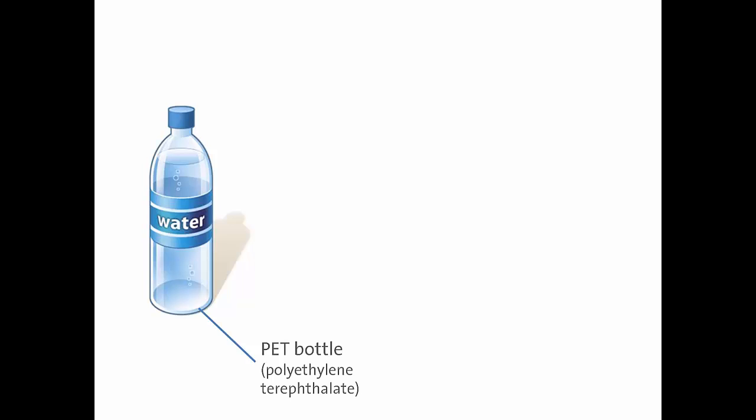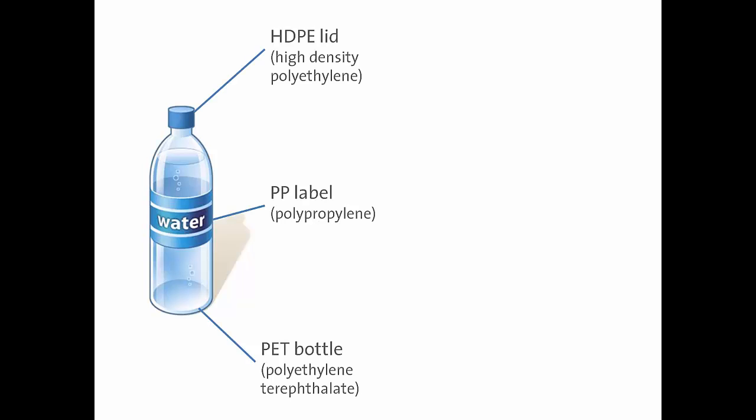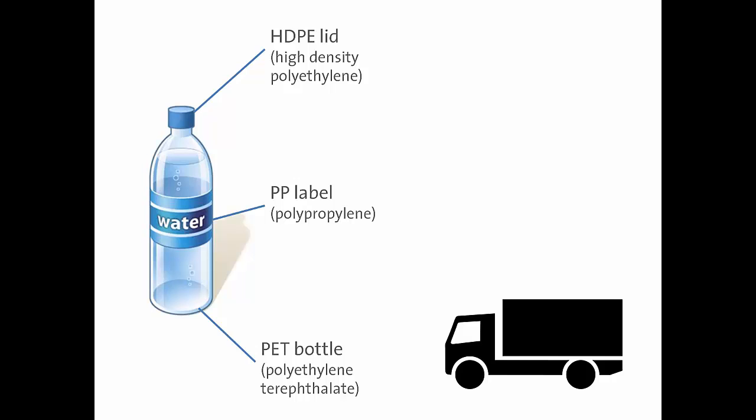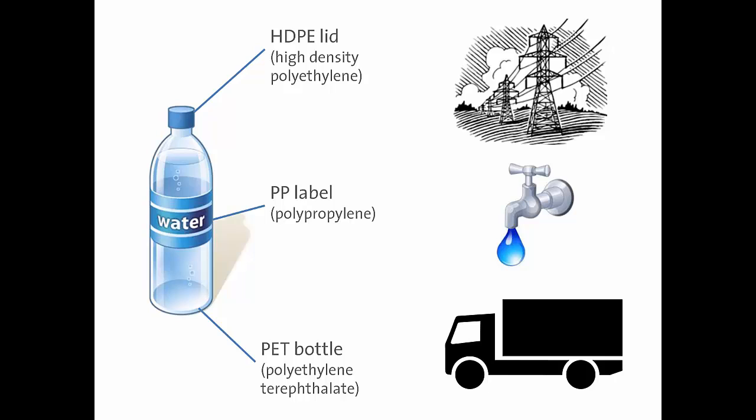So this is the initial situation we're looking at. We want to look at a water bottle made of PET, PP for the label, and high density polyethylene for the lid. We're obviously going to require some transportation in the production process as well as the water itself, and a bit of electricity goes into processing.